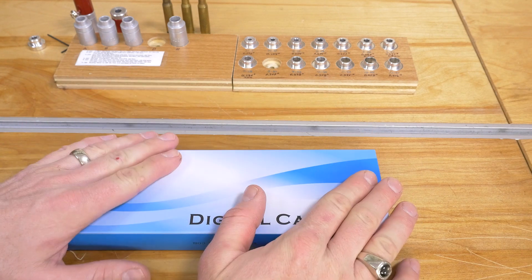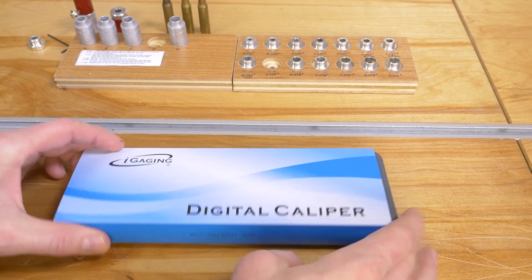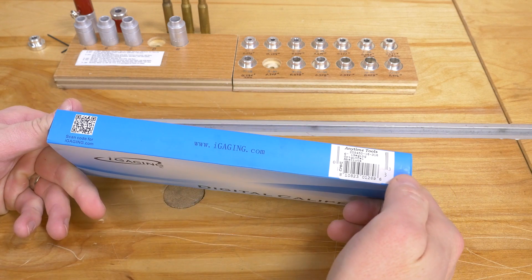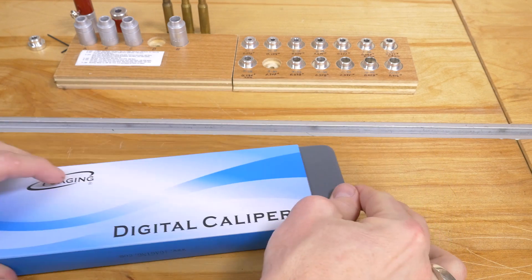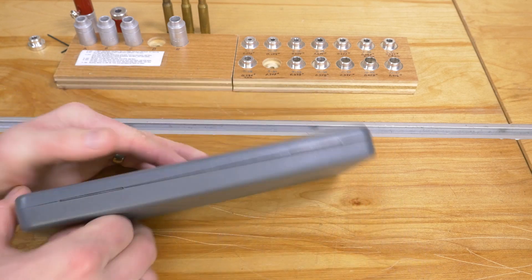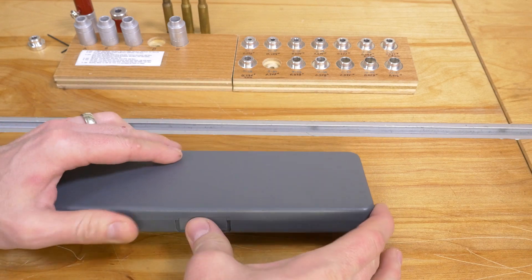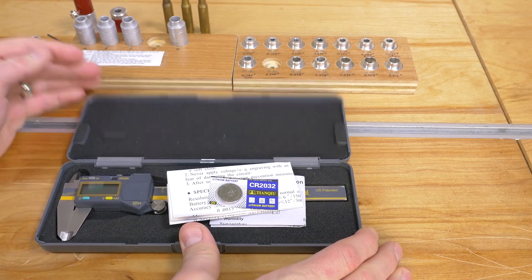This is what you get with iGaging Origin Cal 0-6 inch digital calipers. You've got the typical cardboard sleeve here, and when you slide that off, you've got a pretty typical plastic case. It's pretty good quality here, good hinges. You press on the tab and it opens up.